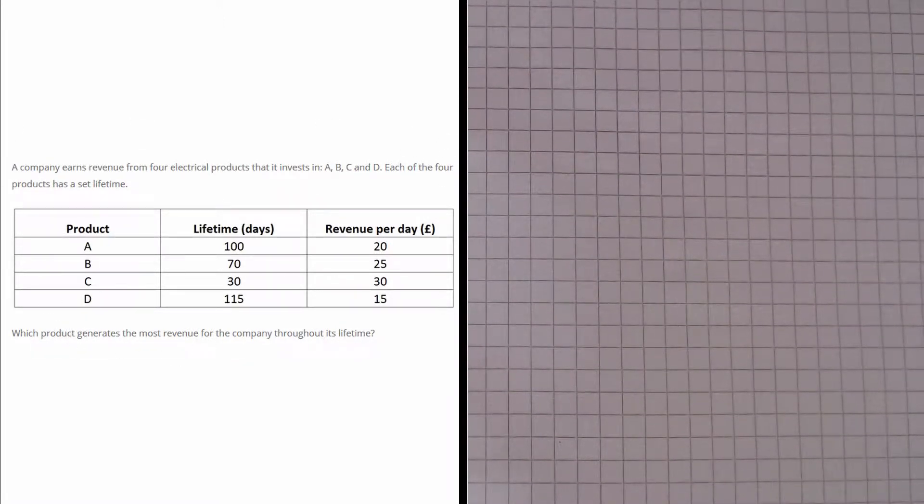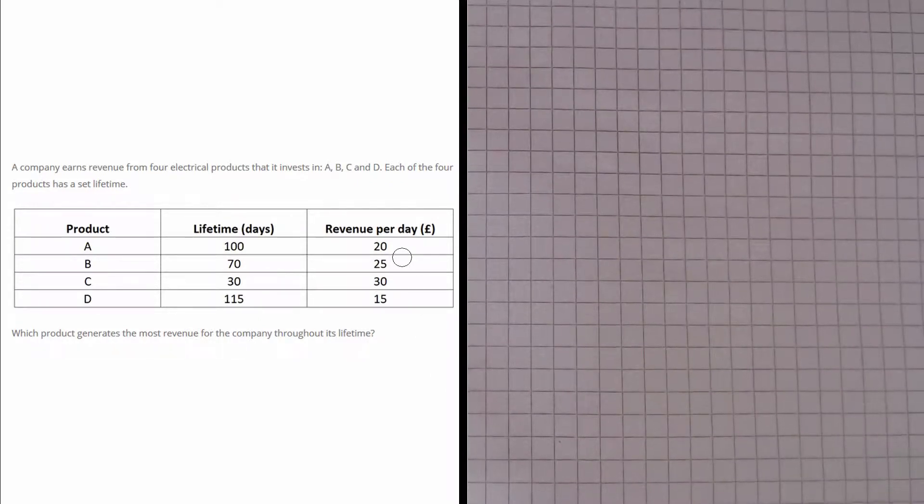We are given a table, and in the table we are given four products. We are given their lifetime in days and the revenue they generate per day.